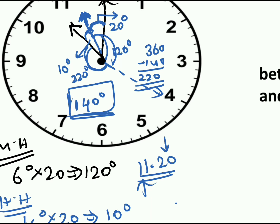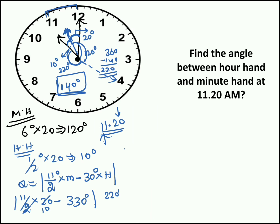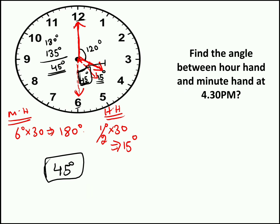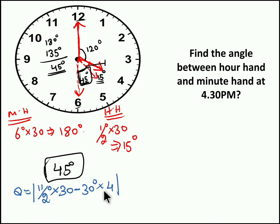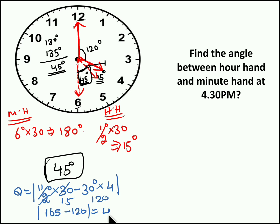Let us apply the same trick to the first problem — 4:30 PM. Theta = |11/2 × 30 − 30 × 4|. Cancelling 2 into 30 gives 15, so 11 × 15 = 165. And 30 × 4 = 120. So 165 minus 120 = 45 degrees. The answer is 45 degrees, which matches our earlier answer. You can use this short trick or the traditional approach — whichever you feel comfortable with. To truly understand the concept, practice this type of problem at least 4 to 5 times.